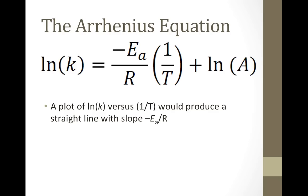In this slope-intercept form of the equation, we see that by plotting the natural log of the rate constant versus the inverse Kelvin temperature, we get a straight line with a slope equal to negative Ea over R. That means by collecting data to determine rate constants at different temperatures, one can experimentally determine the activation energy needed for a chemical reaction just by examining the slope.